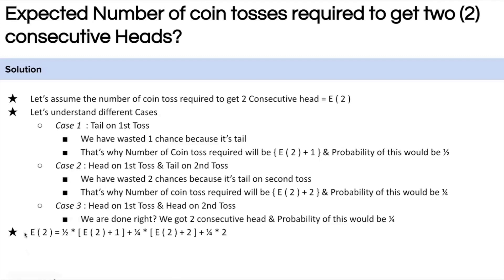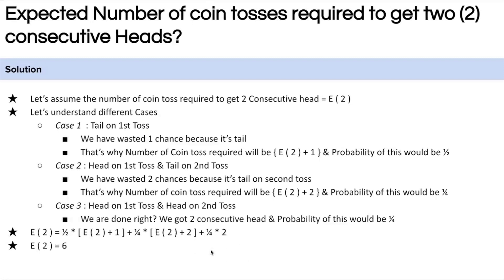These are the three possible cases. The equation to solve is: E(2) = (1/2) × (E(2) + 1) + (1/4) × (E(2) + 2) + (1/4) × 2. Here, E(2) is the expected number of coin tosses to get two consecutive heads. The term plus one accounts for the wasted first toss that came up tails, with probability 1/2.